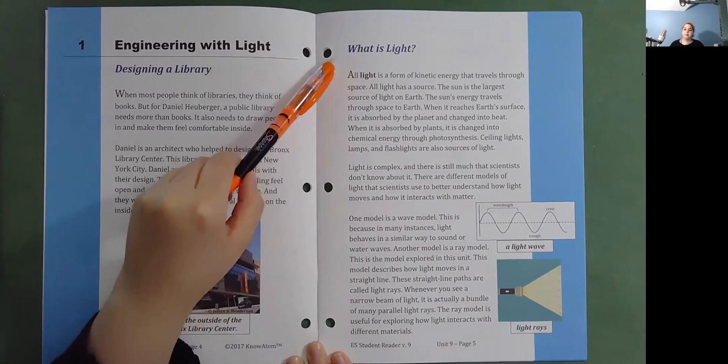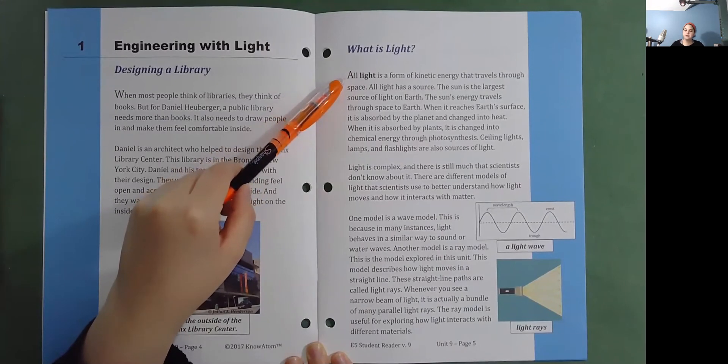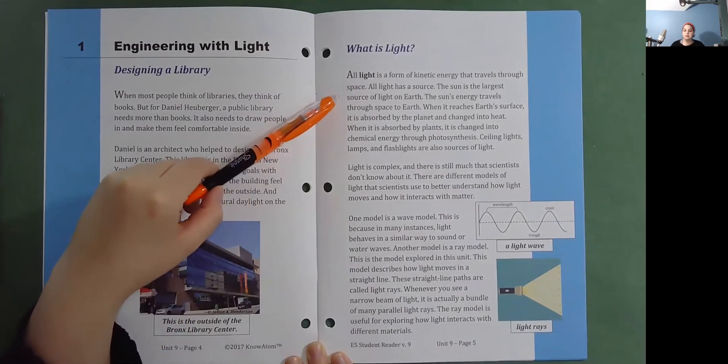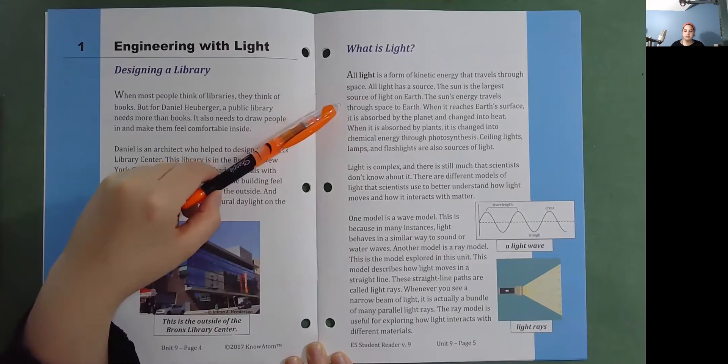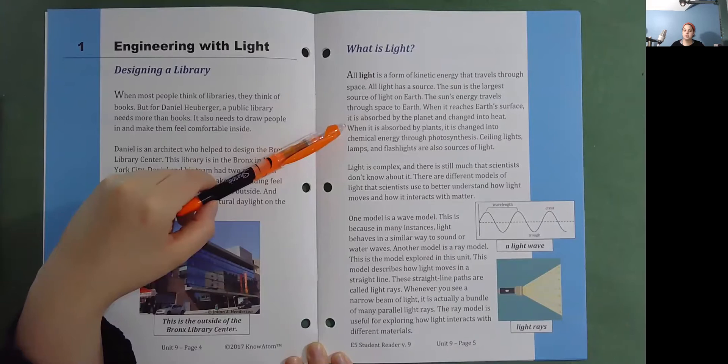What is light? All light is a form of kinetic energy that travels through space. All light has a source. The Sun is the largest source of light on Earth. The Sun's energy travels through space to Earth. When it reaches Earth's surface, it is absorbed by the planet and changed into heat. When it is absorbed by plants, it is changed into chemical energy through photosynthesis.